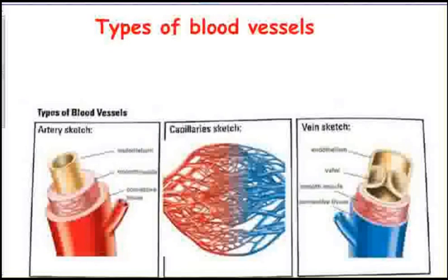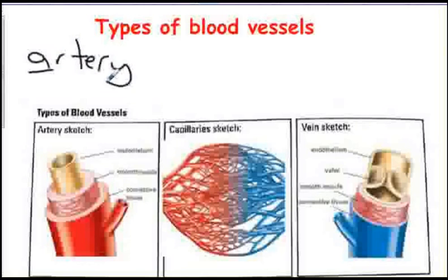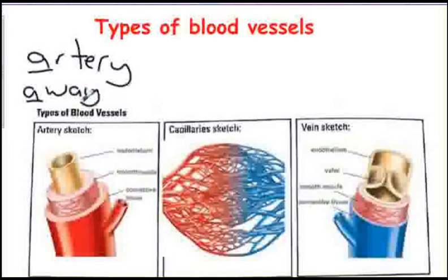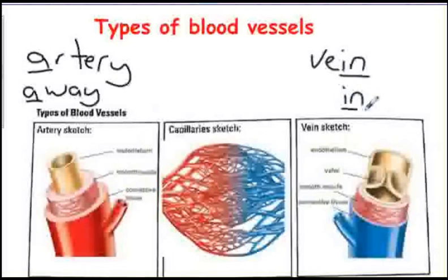There are three types of blood vessels that make up the circulatory system. Arteries carry blood away from the heart and therefore the blood in them is under really high pressure. To cope, they need a thick elastic wall. Veins bring the blood back into the heart under much less pressure so the walls are thinner and less elastic. Veins also have valves to keep the blood flowing in the correct direction.